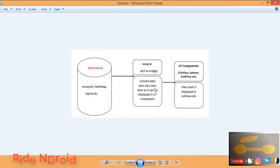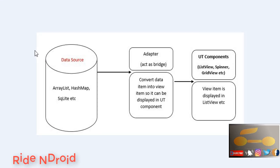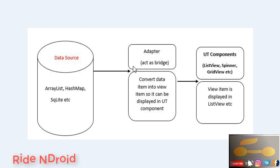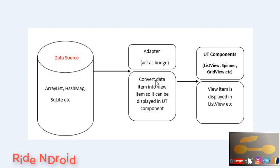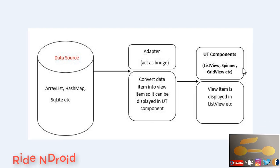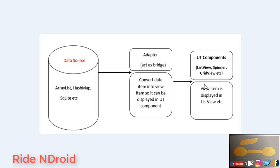Here we can see the data source part, which includes an ArrayList, HashMap, SQLite, etc. Then the adapter acts as a bridge between the ListView, GridView, and other UI components. It converts data into view items so they can be displayed in the UI component — such as ListView, GridView, etc. — and the view item is displayed on the list.